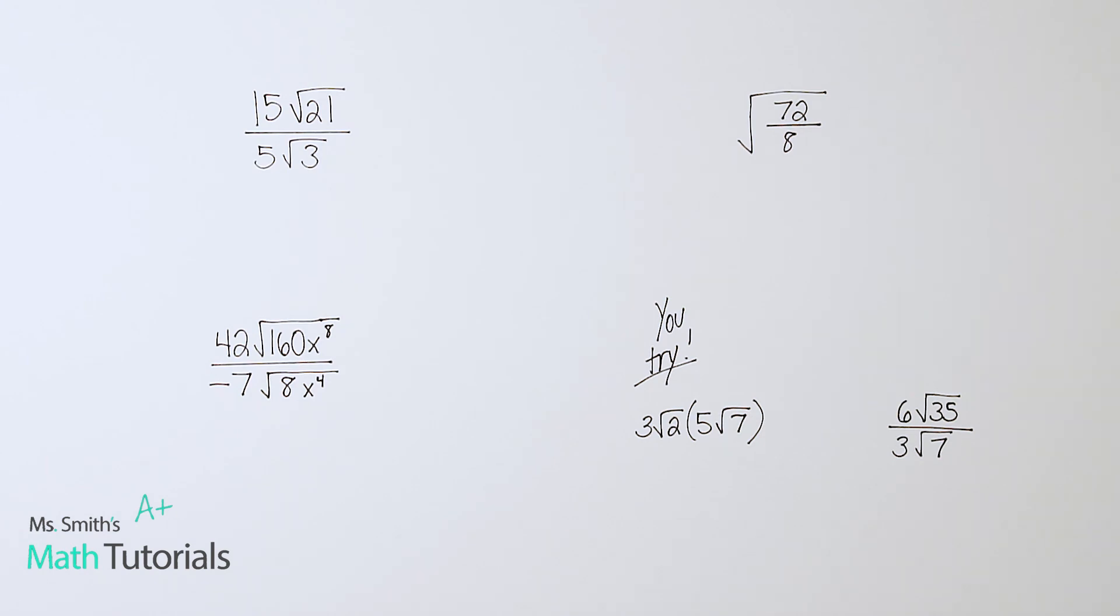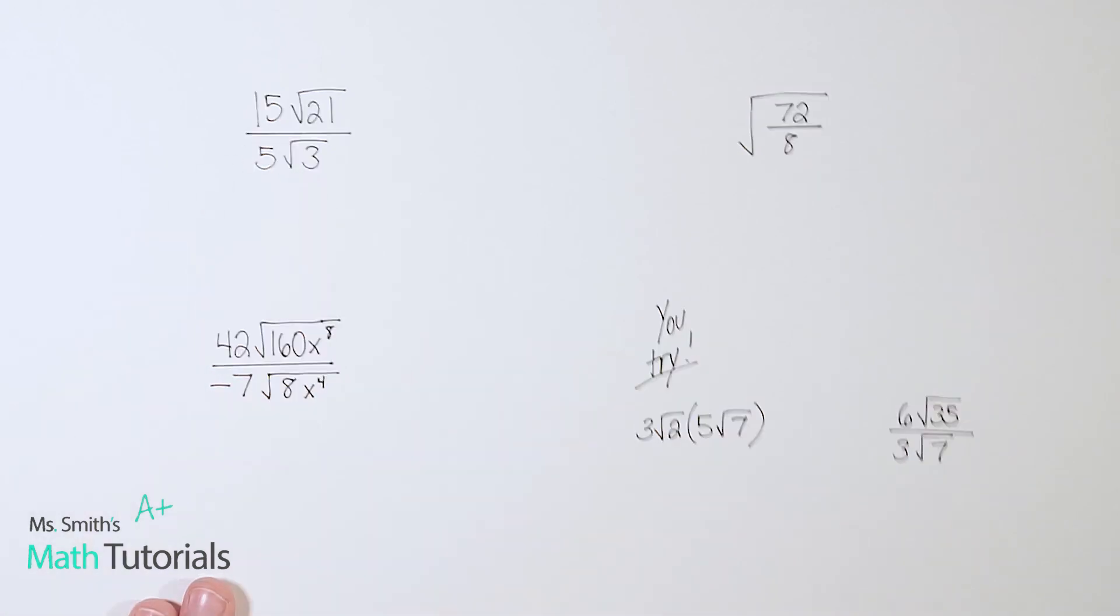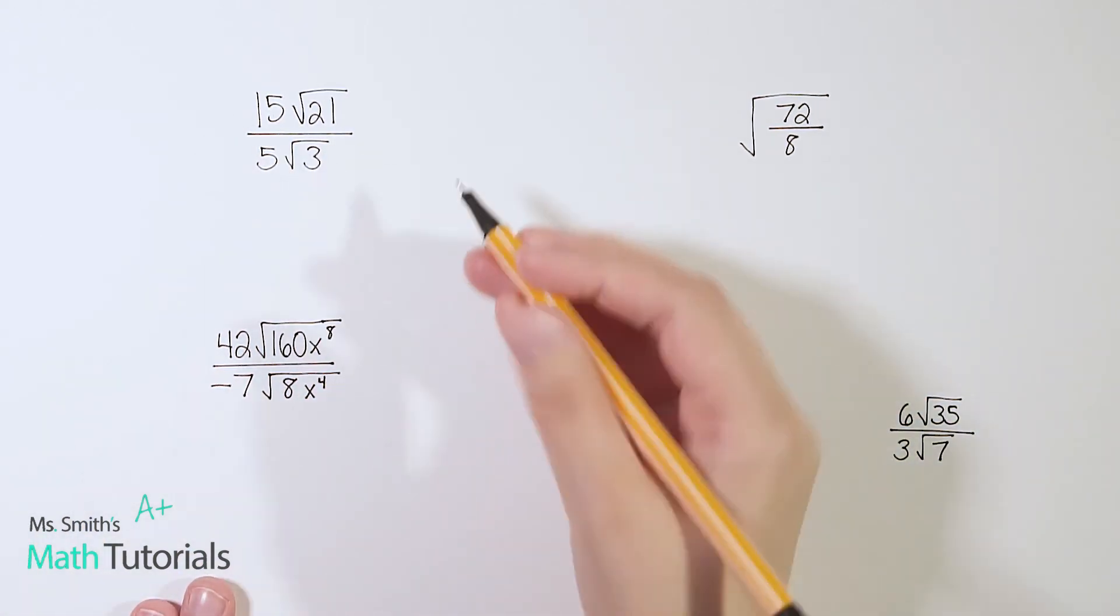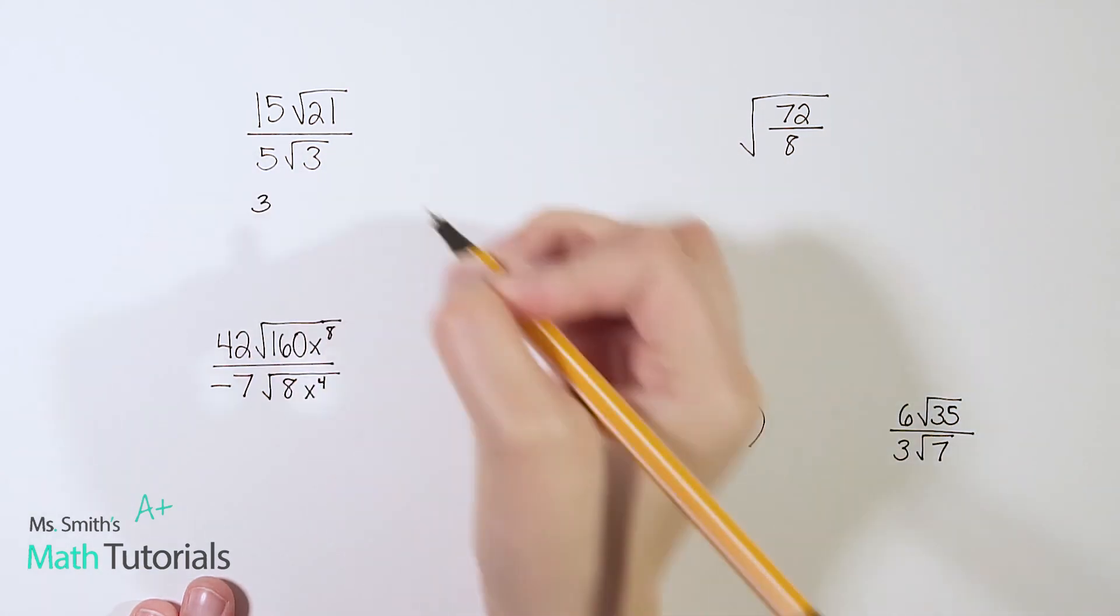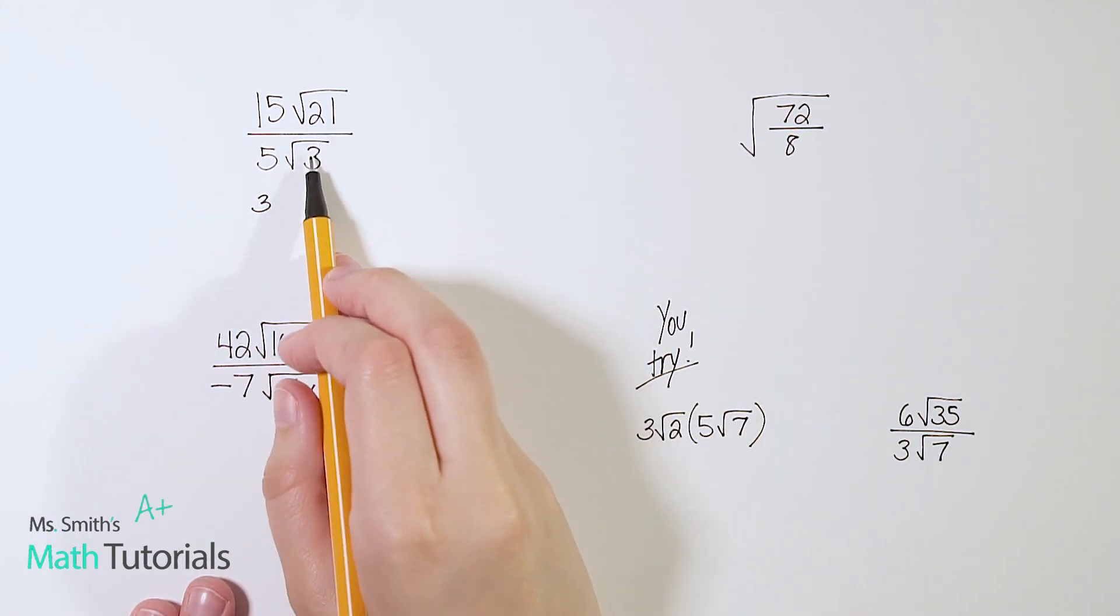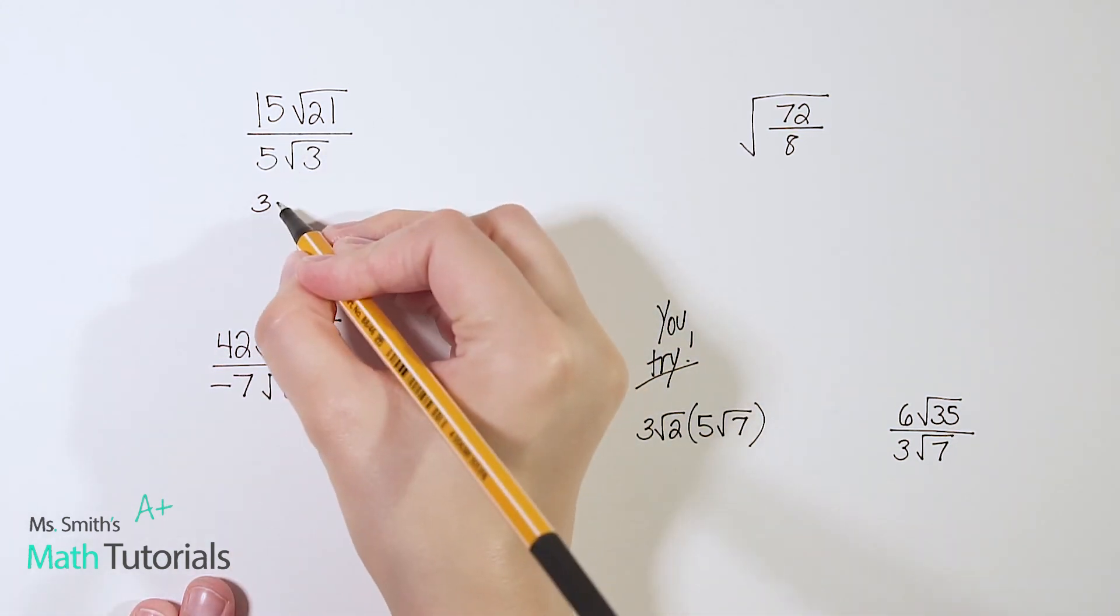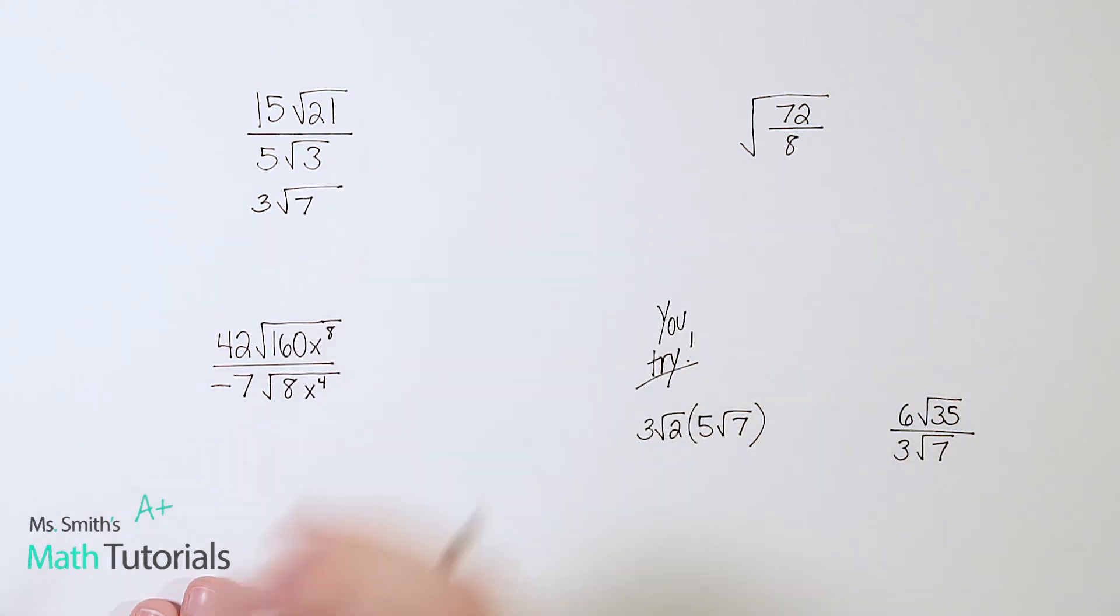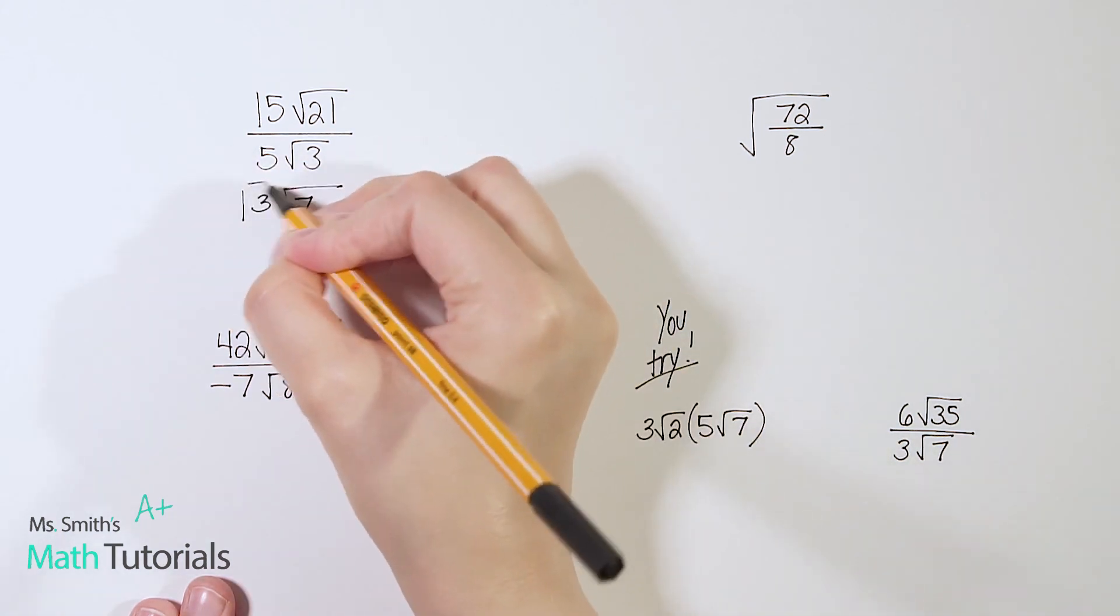So in all of these examples, you'll notice we're dividing in each one. Remember our steps that we divide the coefficient, the number outside the radical. Then we divide the number underneath the radical and then we simplify if we can. So let's start with 15 divided by 5. So we're going to do the coefficient first. 15 divided by 5 is 3. And then 21 divided by 3, this is underneath the radical. 21 divided by 3 is 7. Now I cannot simplify 3 times the square root of 7. That's as low as it goes. So that is my final answer.